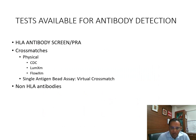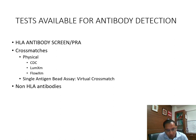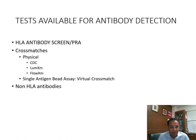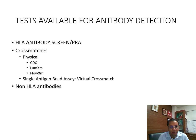What are the tests available for antibody detection? Tests include antibody screen or PRA, crossmatches — both physical and virtual. Physical crossmatches include the CDC crossmatch, the lysate-based Luminex crossmatch, and the flow crossmatch. You can also do a single antigen bead assay and donor antigen typing for a virtual crossmatch. Additionally, there are non-HLA antibodies which are also known to cause rejection — both acute and chronic antibody mediated rejection — and sometimes we need to check for these non-HLA antibodies.